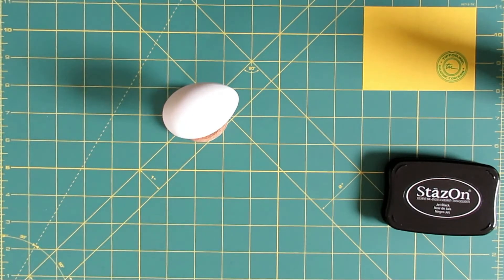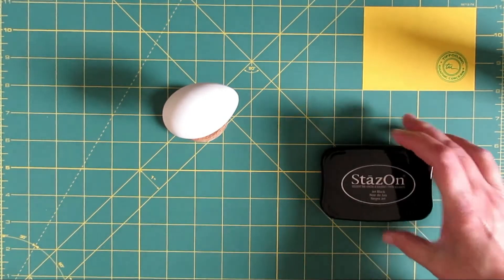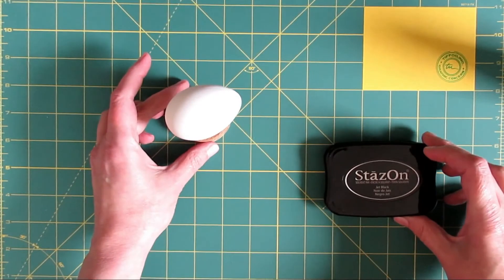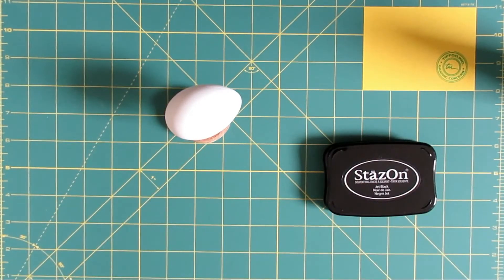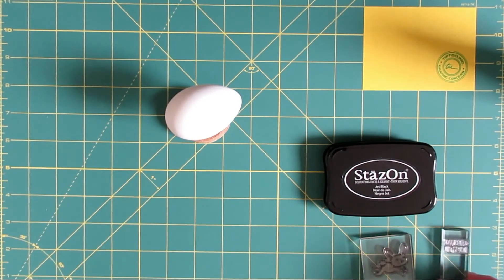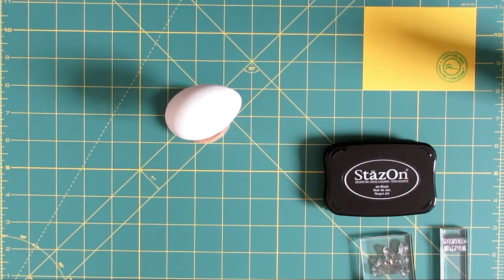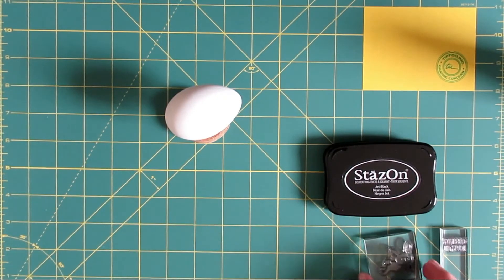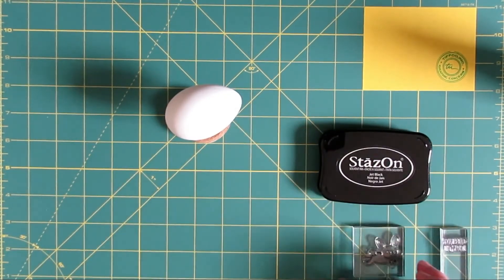Now that your supplies are together, it's time to stamp the egg. Arrange your work surface like you normally would for stamping, except instead of a paper card in front of you, you have your egg on its stand. You won't be able to use a stamp positioning tool for this project, because those things only work on flat surfaces.